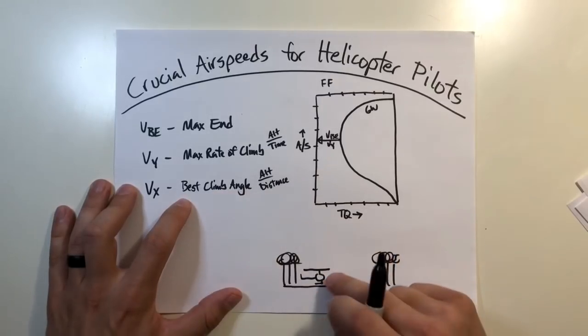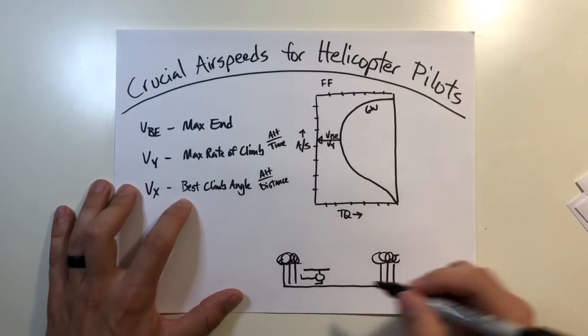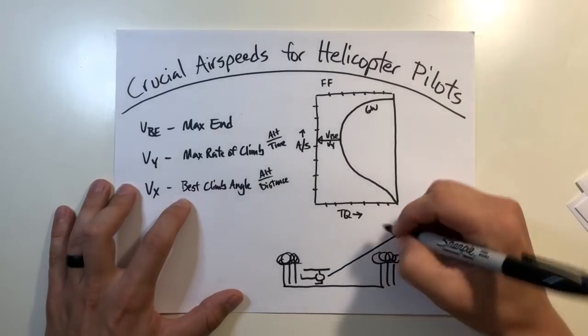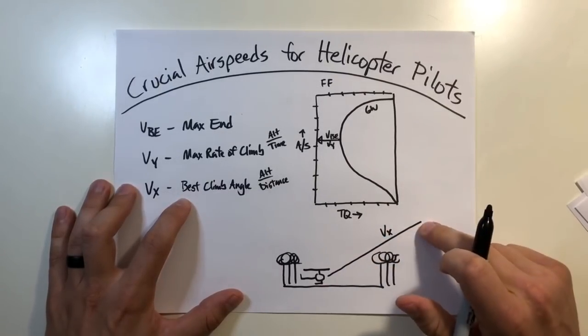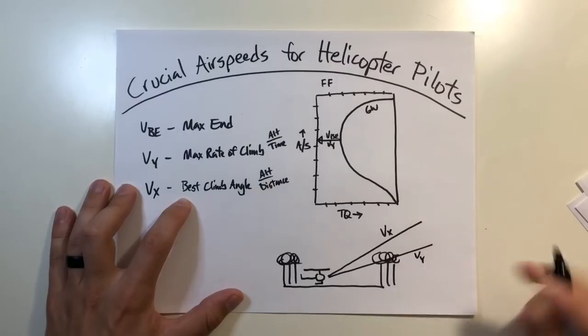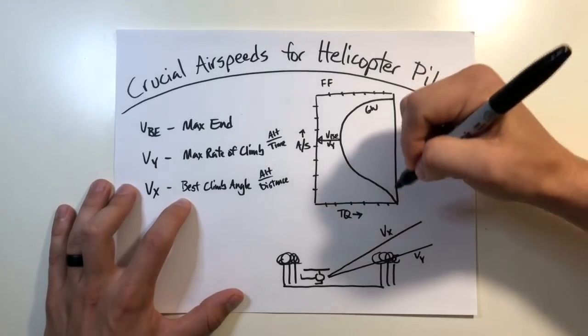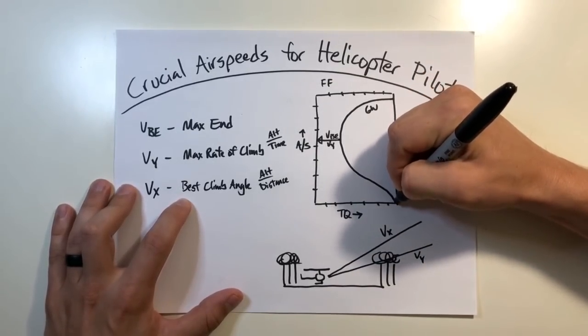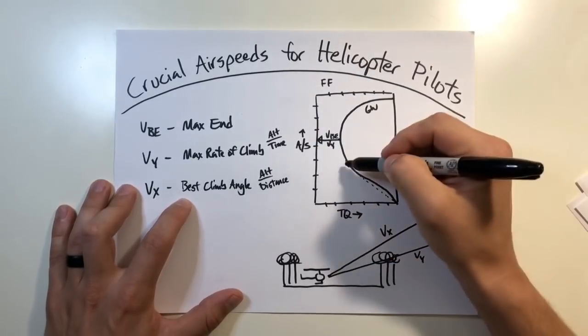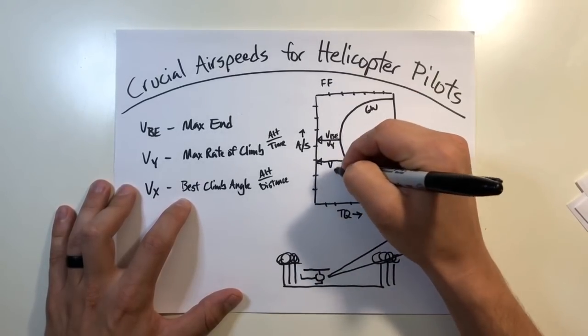Your best climb angle is going to give you the most climb per distance or unit of distance. So what that looks like is our VX angle is potentially going to give us an angle that clears us getting out of this confined area, whereas our max rate of climb angle may give us an angle, something like that, a VY angle. But how that looks like on the cruise charts, how to calculate that, is you enter the chart where your max torque is, and you want to go to the point at which you intersect the drag chart just once, or your gross weight line just once, and follow it over here, and you'll get a speed for VX.